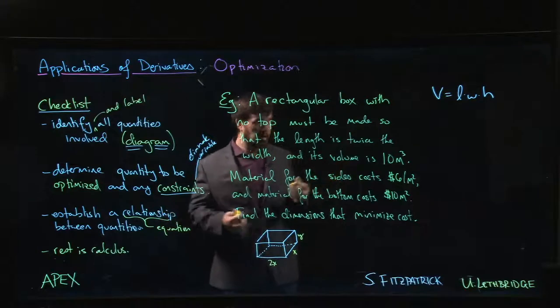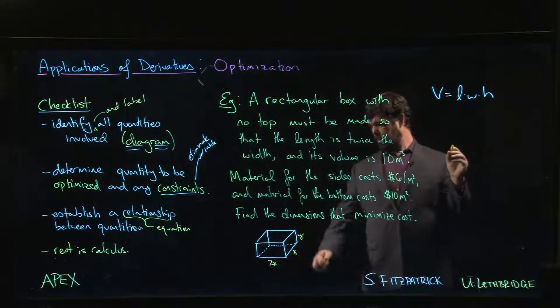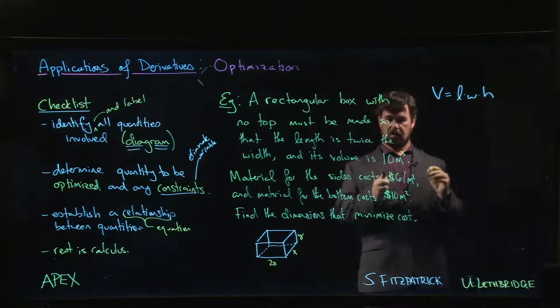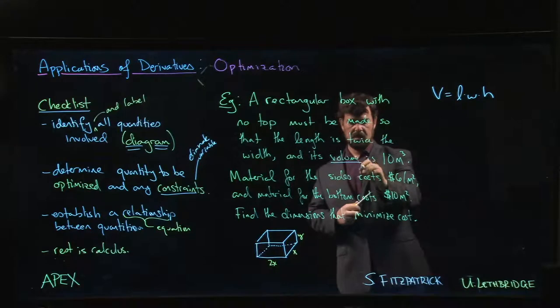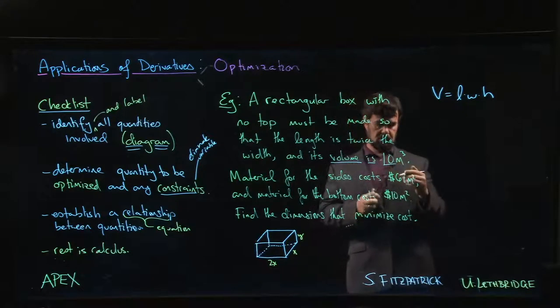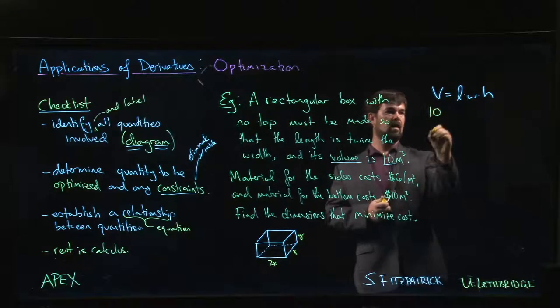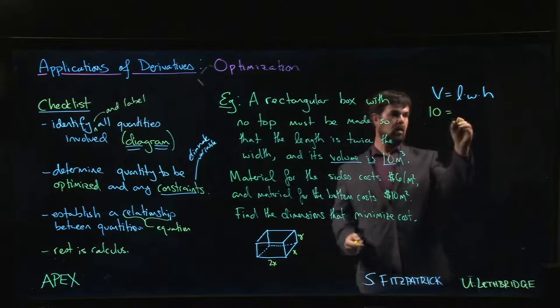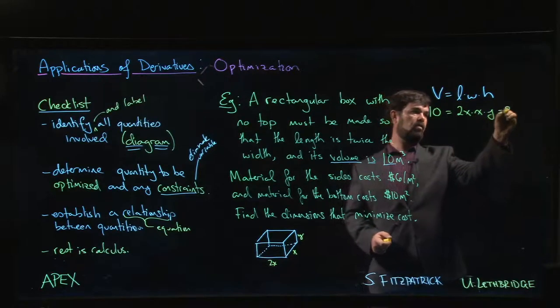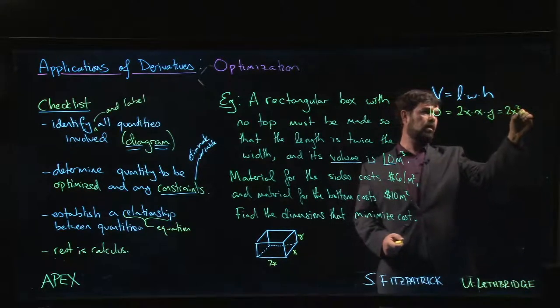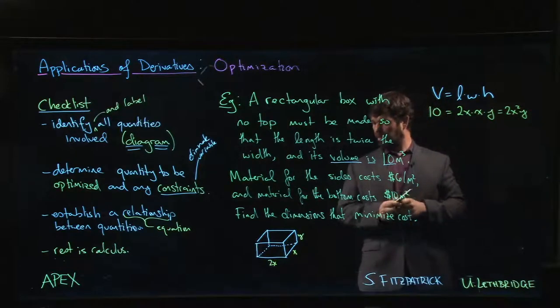So if this is x, then this side must be 2x. The remaining side, the height, let's call it y. Alright, okay, so the volume—length times width times height—has to be equal to 10. So it turns out the volume here is actually this is our constraint. That's a constraint. So 10 has to equal 2x times x times y, so 2x squared y.